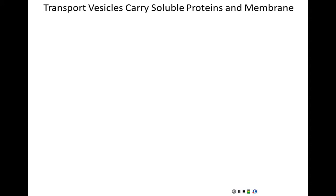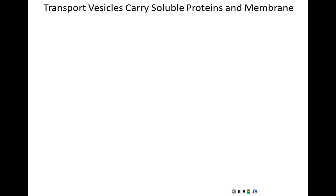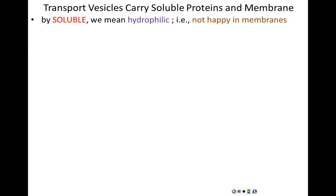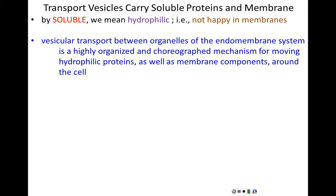The main role of transport vesicles is to carry things that are soluble, hydrophilic, and things that won't easily diffuse across a cell membrane. When we say soluble proteins and soluble membranes, we mean hydrophilic — water soluble, polar, not hydrophobic. Vesicle transport between organelles of the endomembrane system is very, very choreographed — a highly regulated pathway which moves hydrophilic things around the cell.